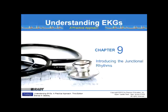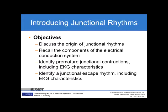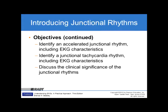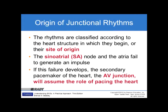This is Chapter 9: Introduction to Junctional Rhythms. Objectives include discussing the origin of junctional rhythms, recalling components of the electrical conduction system, and identifying premature junctional contractions, junctional escape rhythm, accelerated junctional rhythm, and junctional tachycardia — each including EKG characteristics — as well as discussing the clinical significance of junctional rhythms.